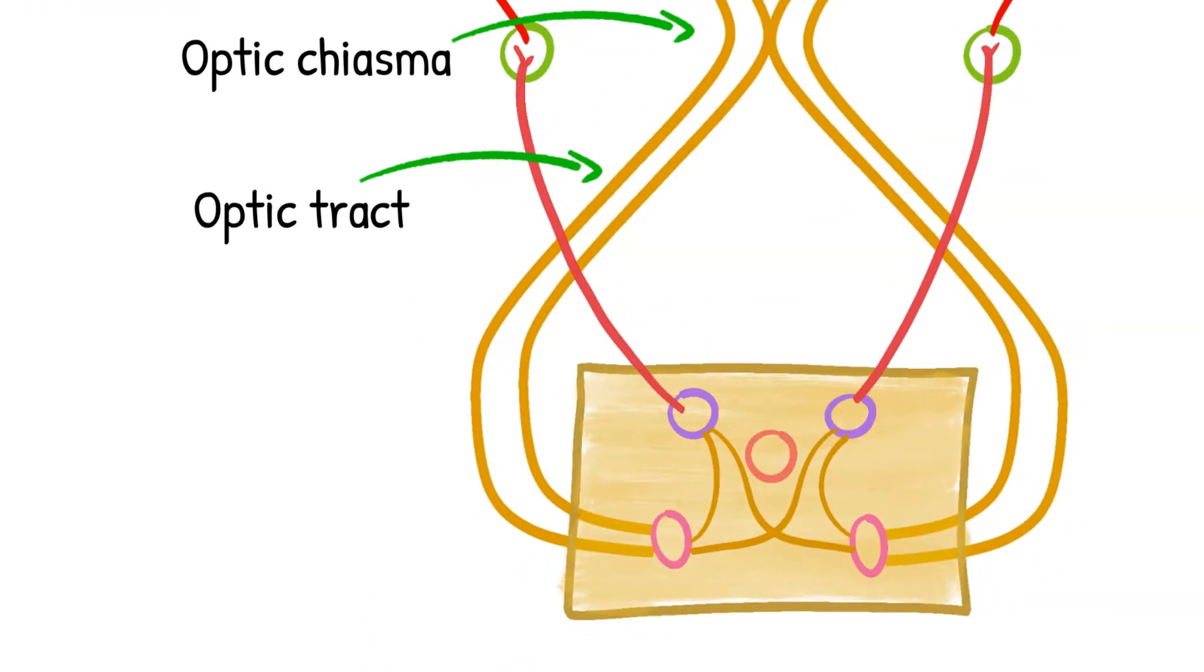From the optic tract, they leave the visual pathway fibers which continue to the lateral geniculate body and reach the pre-tectal nucleus.